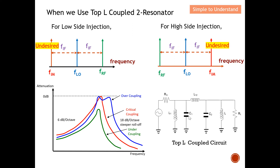This diagram shows the Top-L coupled resonator, and you can see the frequency response on the left. From here you can clearly see that on the high side — above the resonant frequency f0 — there is actually a steeper roll-off factor. Hence, for this Top-L coupled two-resonator, I actually prefer to use it in high-side injection, because with a steeper roll-off factor at the higher end I will be able to quite confidently remove the image. Therefore, for a Top-L coupled two-resonator, I prefer to implement it at high-side injection.